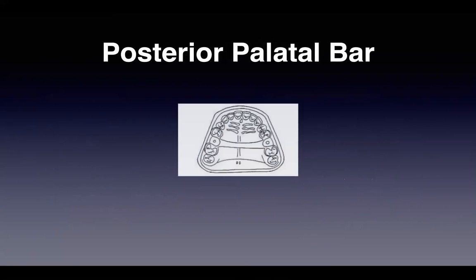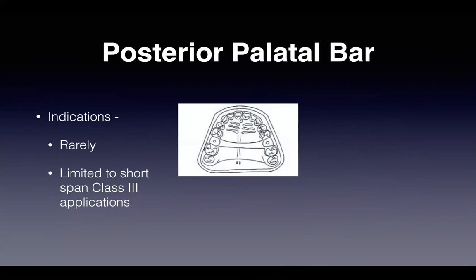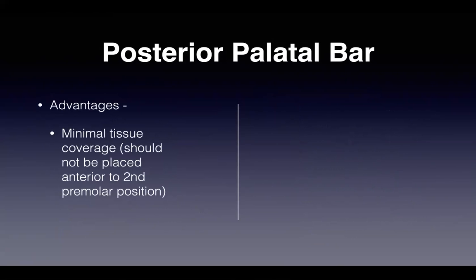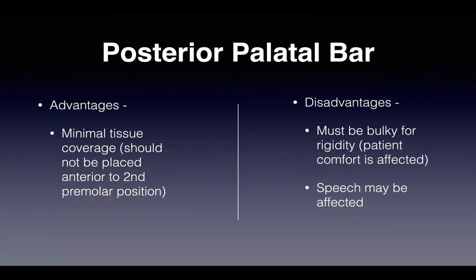The posterior palatal bar is limited to short-span Class III applications. Contraindication: palatal torus. Advantage: minimal tissue coverage, and it should not be placed anterior to the second molar position, so it doesn't greatly affect the patient. Disadvantage: it must be bulky for sufficient rigidity, which affects patient comfort and can impact speech.